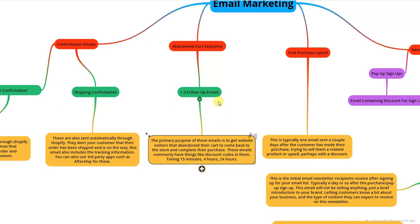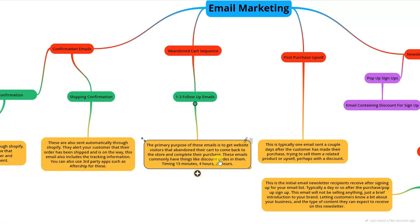The abandoned cart sequence should include one to three emails — two is sometimes a sweet spot, but you can split test between one and three to see what works best for you. This video is just going to cover the theory, telling you what emails you need to have in your backend. If you want a specific tutorial on how to write or create these emails, let me know in the comments.